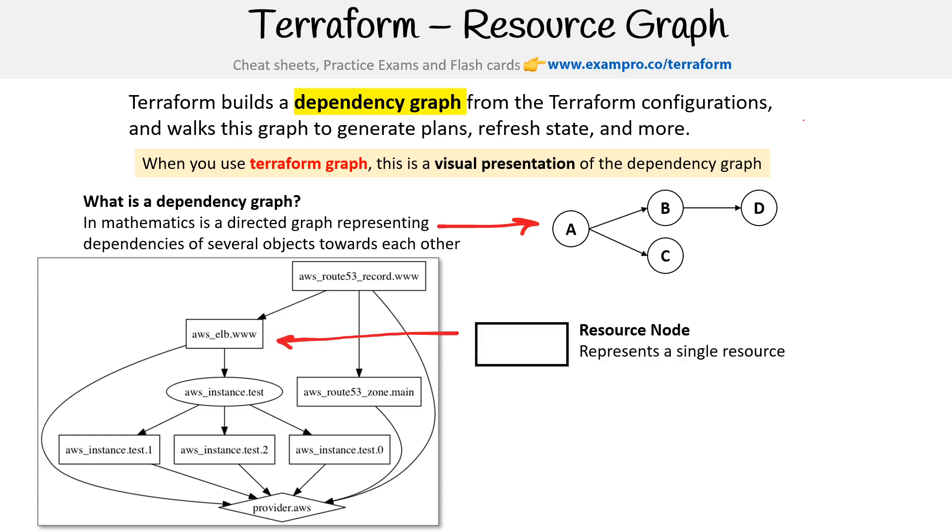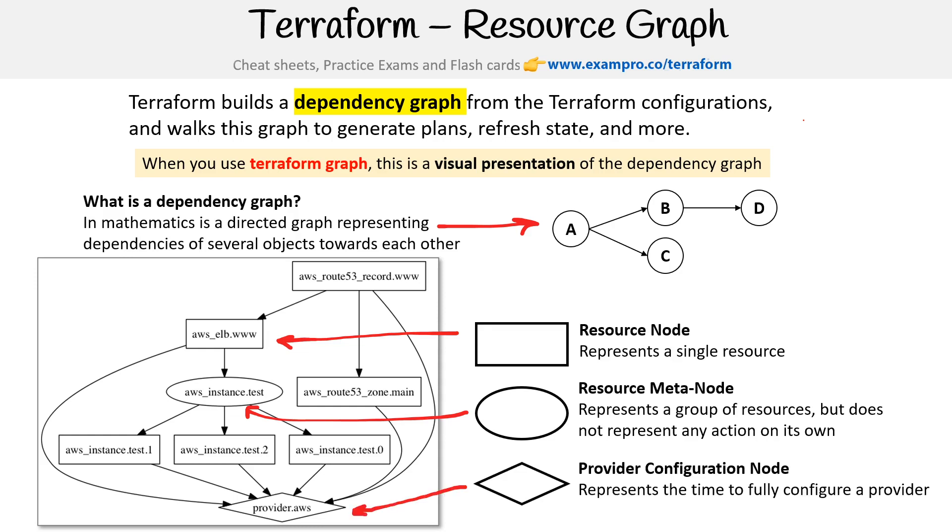There's a few different types here. We have a resource node that represents a single resource, a resource meta-node that represents a group of resources but does not represent any action on its own, and provider configuration nodes that represent the time to fully configure a provider.